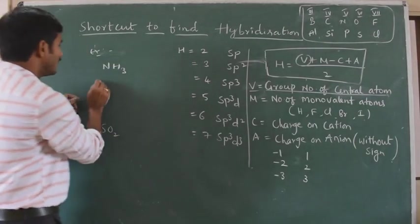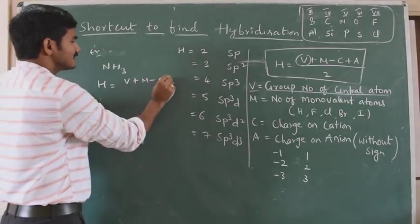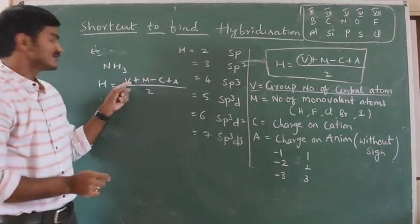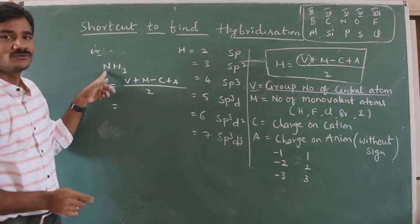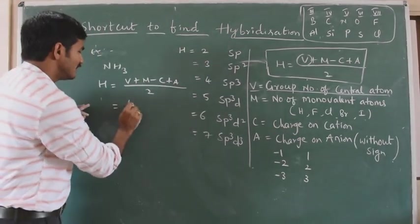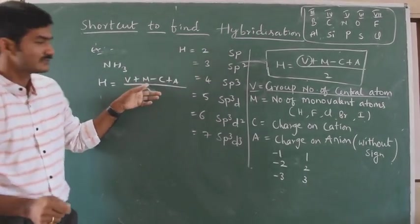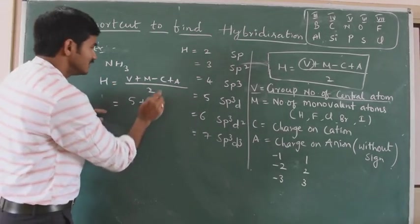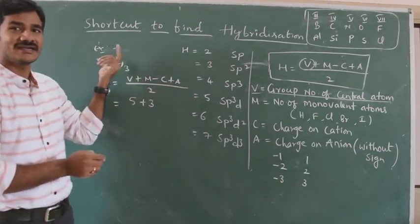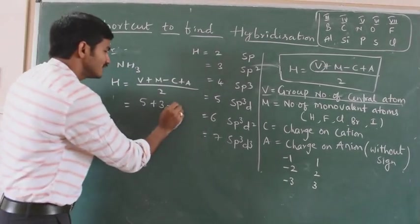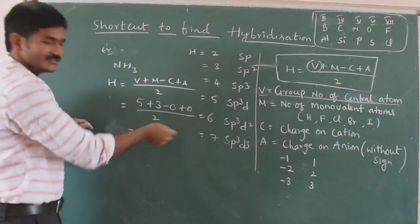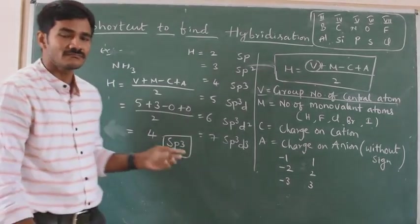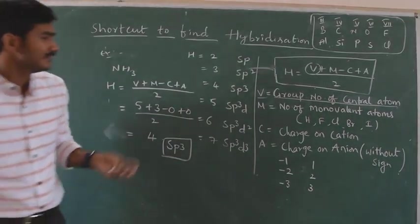Coming to the point. H equals V plus M minus C plus A divided by 2. For ammonia, the central atom is nitrogen. The group number of nitrogen is 5. So V equals 5. M is the number of monovalent atoms — hydrogens are monovalent, and there are 3 hydrogens. There is no charge, so C and A are both zero. Therefore: (5 + 3 − 0 + 0) / 2 = 8 / 2 = 4. Four means SP3 hybridization.